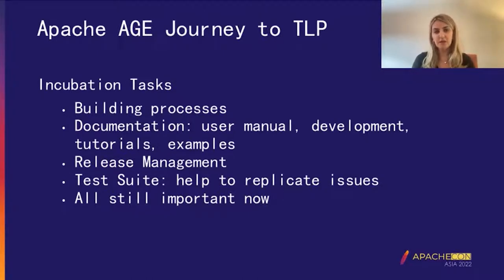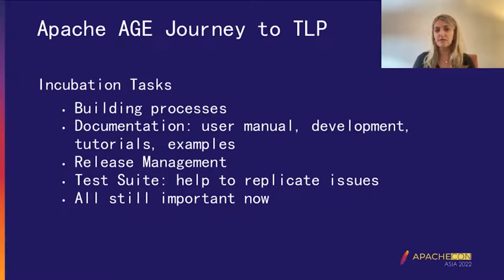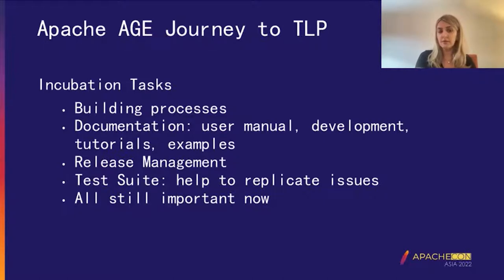Some of the tasks that needed to be done before going through the graduation process were to build processes for tasks that needed to be completed. For example, we needed a specific process for building documentation — the user manual, development documentation, and tutorials. We also needed a process for managing releases and a process for the test suite, which could help the project and community replicate issues. All these processes were important during incubation and are still important now, because Apache AGE must continue to follow those standards and qualities.